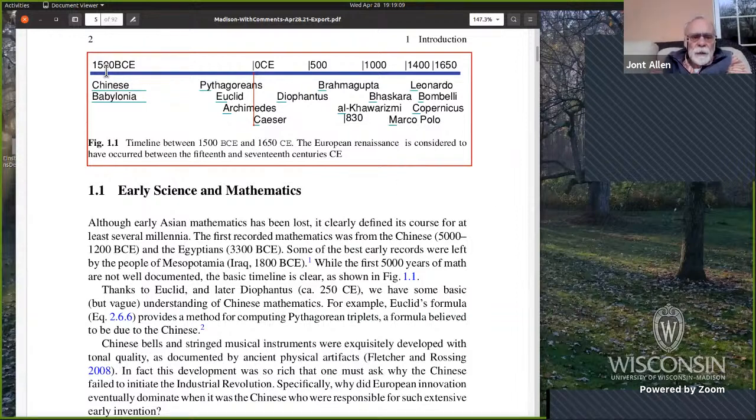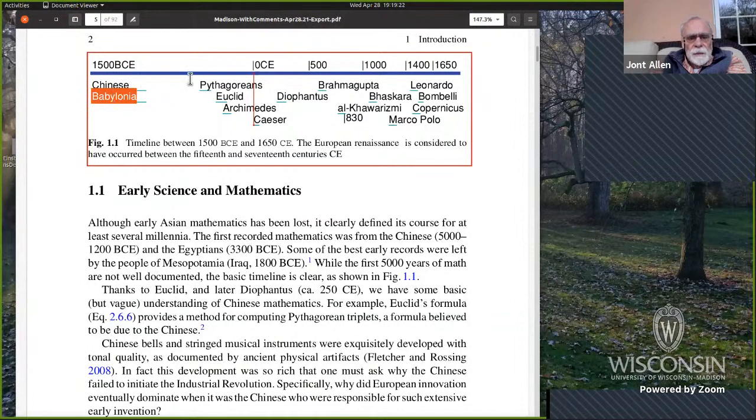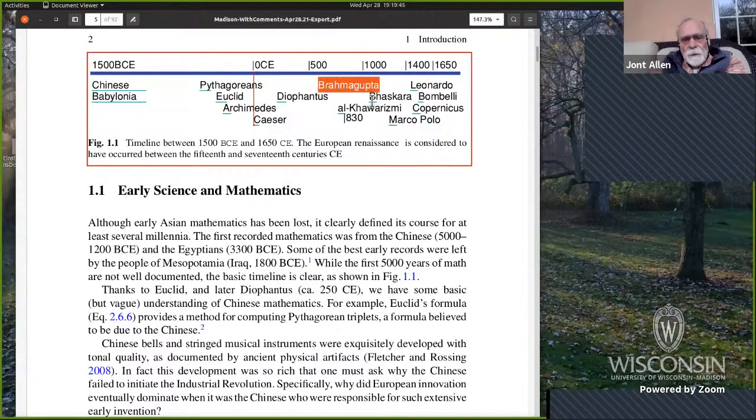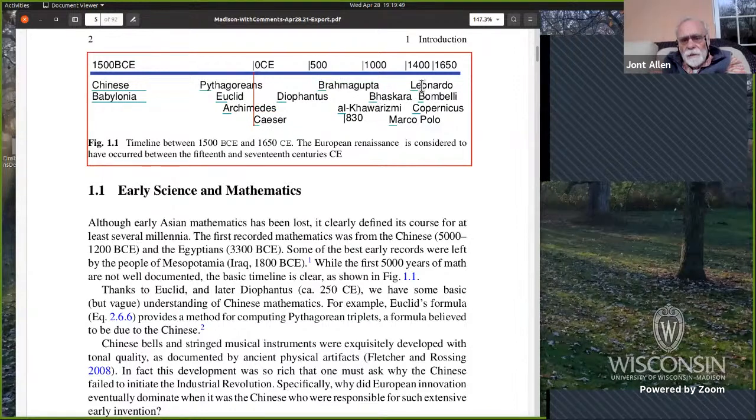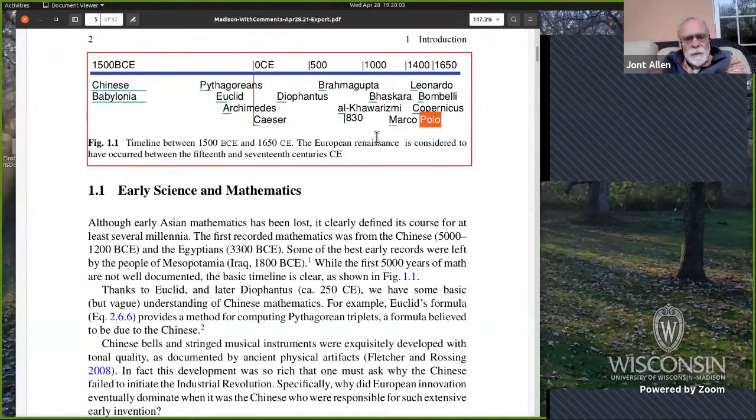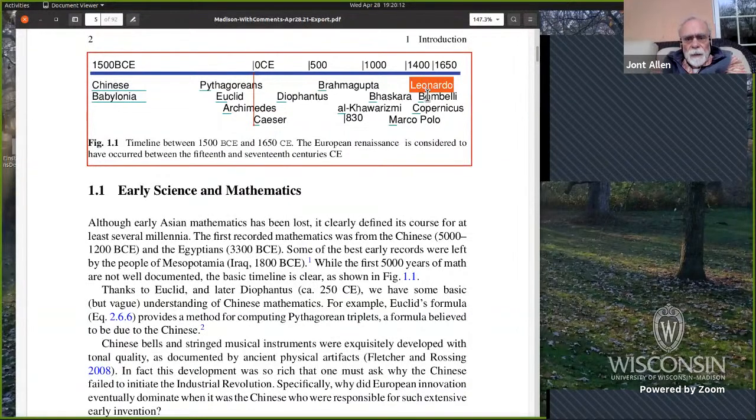So I broke out historical periods. We know a lot more about what happened more recently and very little about what happened 5,000 years ago. But we know to some degree of certainty that Babylonia and the Chinese contributed. Here's the Pythagoreans, Euclid, Archimedes. I put Caesar here because that's when zero starts, time equals zero starts with Caesar.